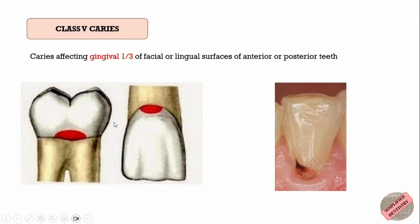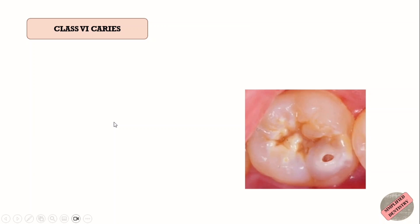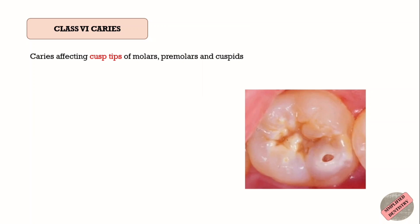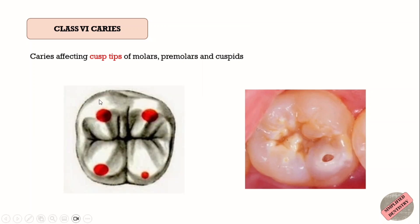Class 6 was never described by Black and was later added by Simon. It includes caries affecting cusp tips of molars, premolars, and cuspids — that is, the canines. Class 6 basically involves the cusp tips without including any other surface.